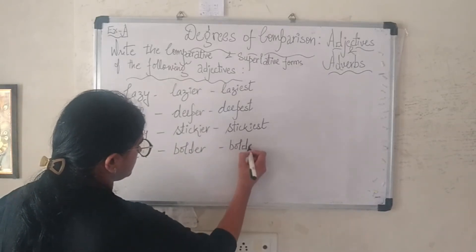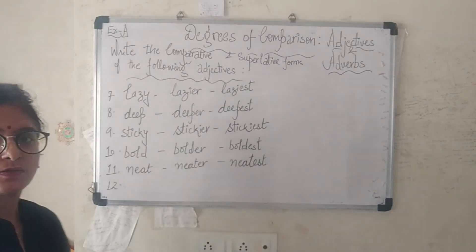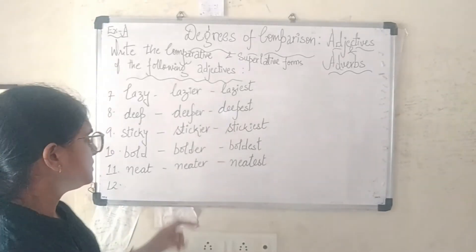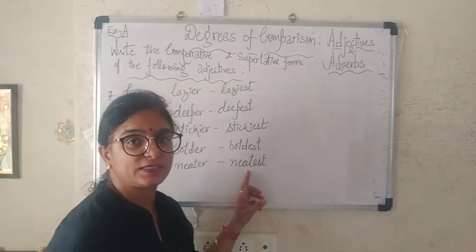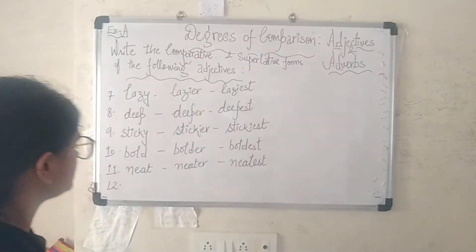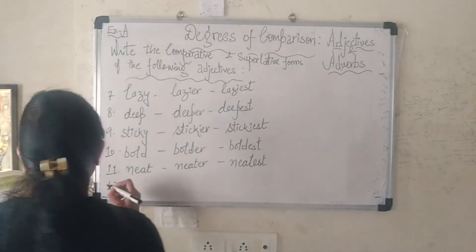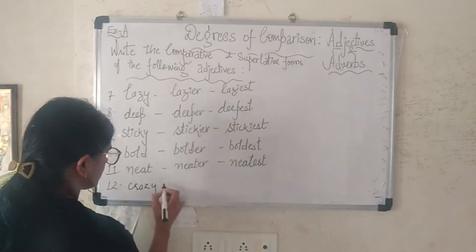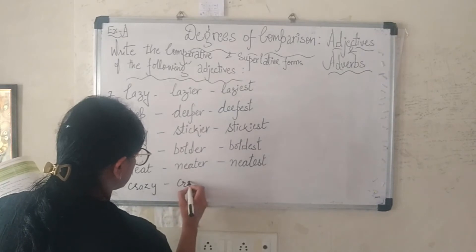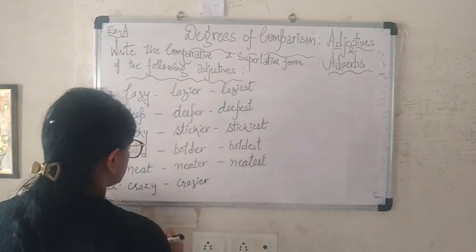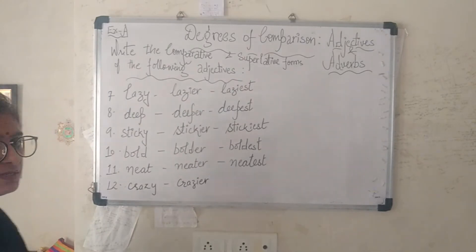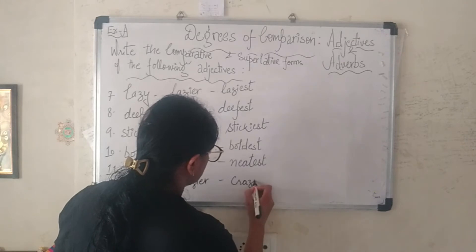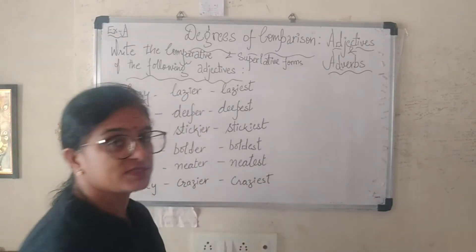The eleventh adjective is 'neat' (n-e-a-t): comparative is 'neater' and superlative is 'neatest'. Now the twelfth adjective is 'crazy' (c-r-a-z-y): its comparative is 'crazier' (c-r-a-z-i-e-r) and the superlative is 'craziest' (c-r-a-z-i-e-s-t).